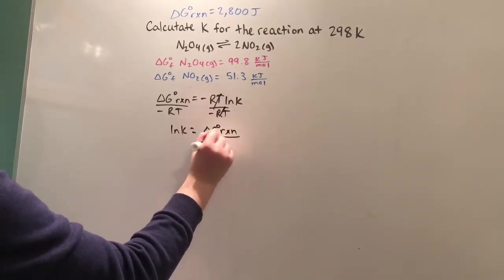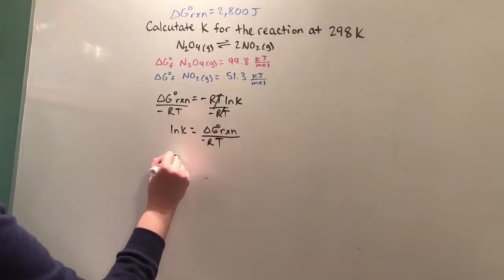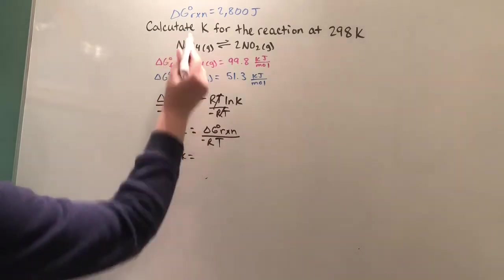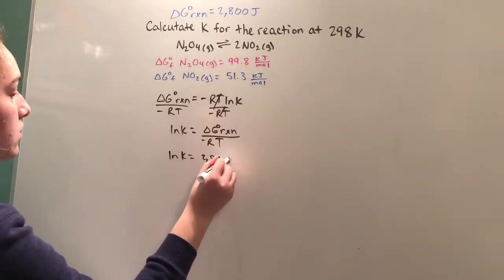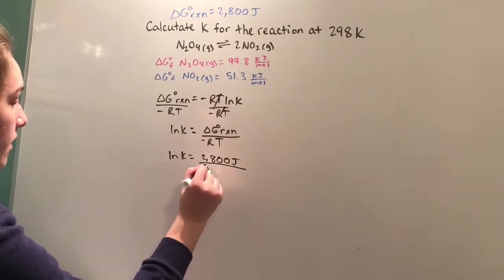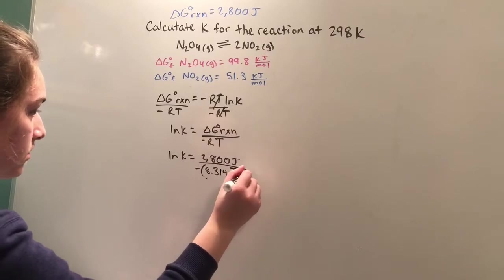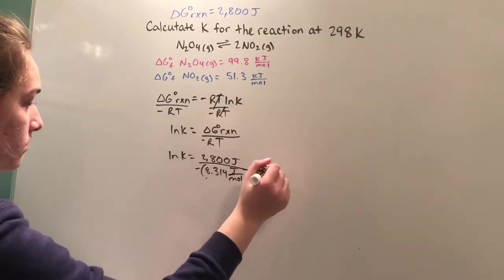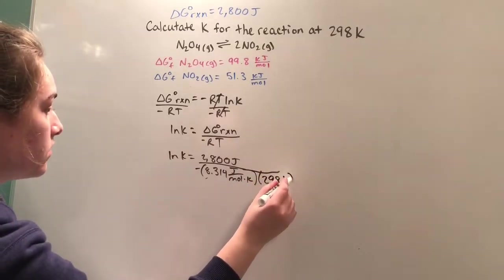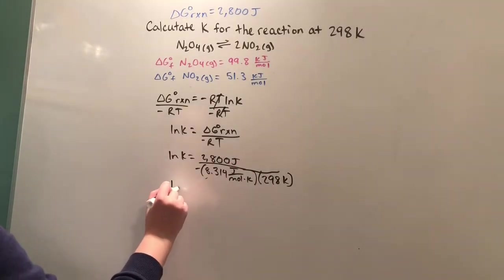Now all we have to do is plug in the numbers that we found. So ln K equals this ΔG reaction that we found, 2,800 joules, divided by negative R, that's a constant 8.314 joules per mole times Kelvin, multiplied by 298 Kelvin.